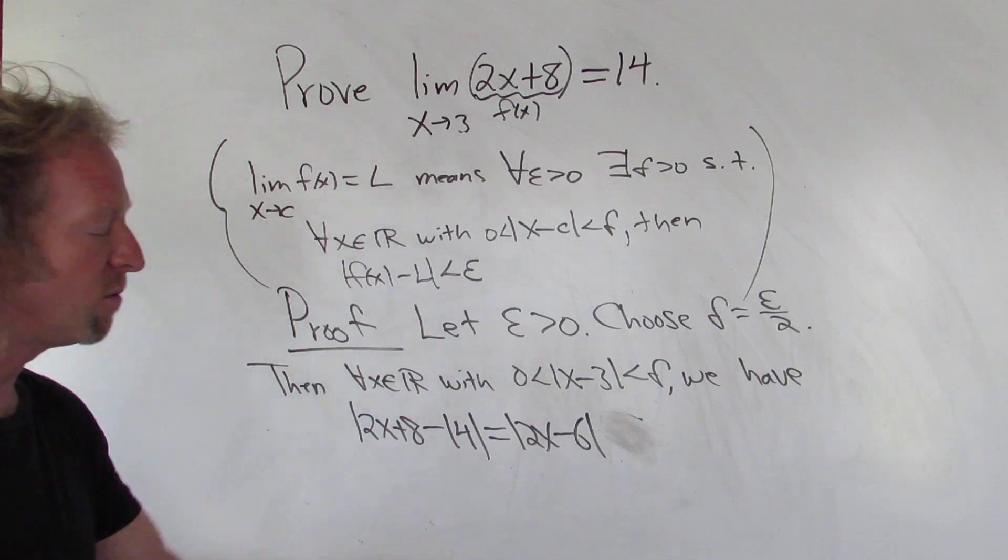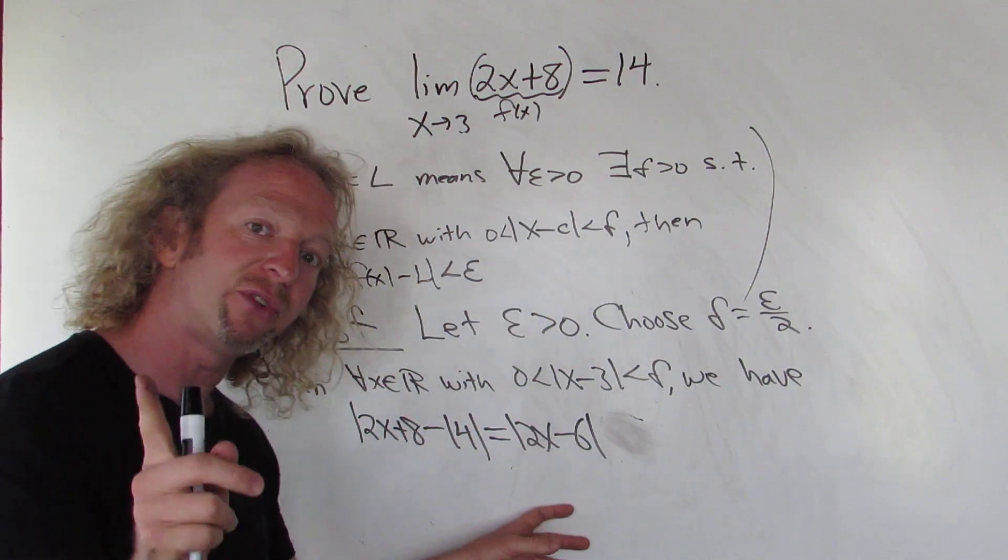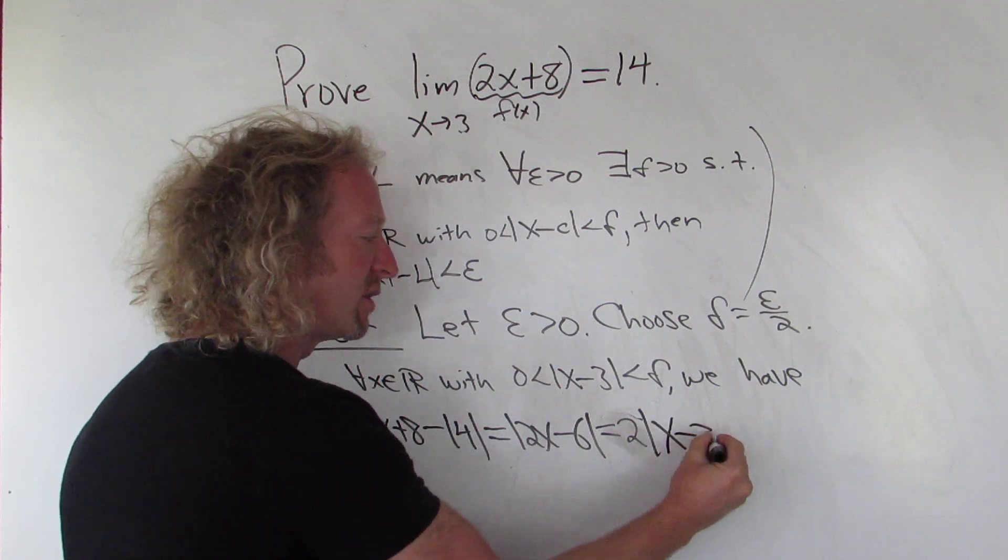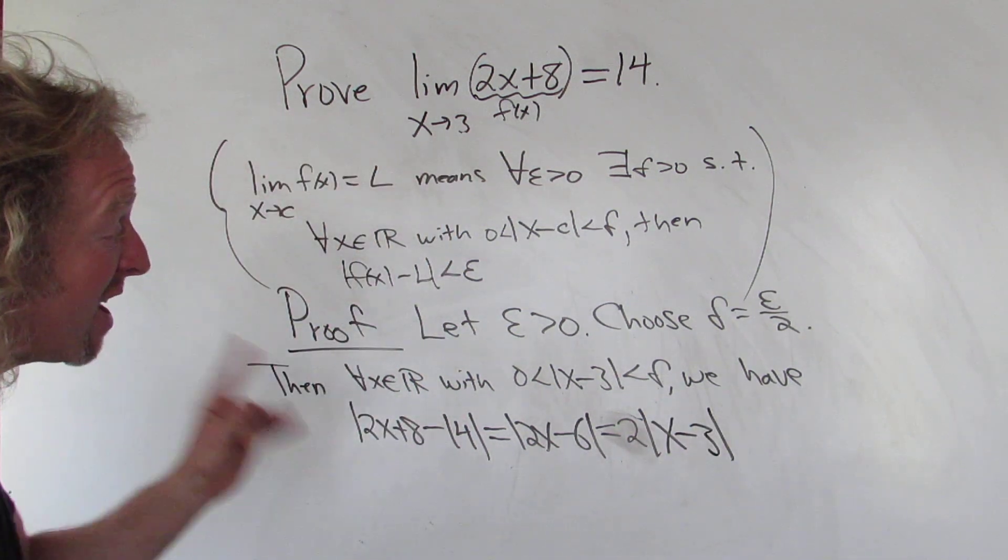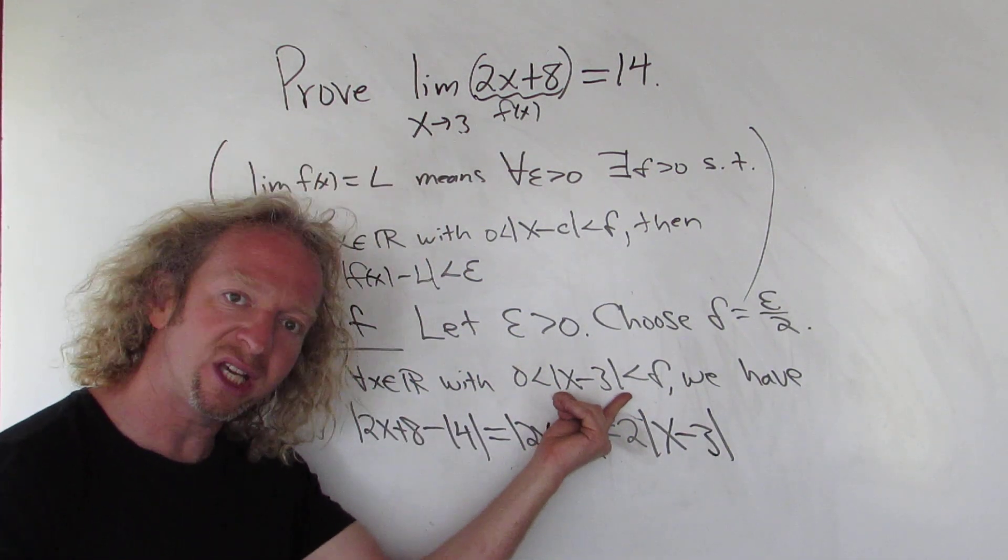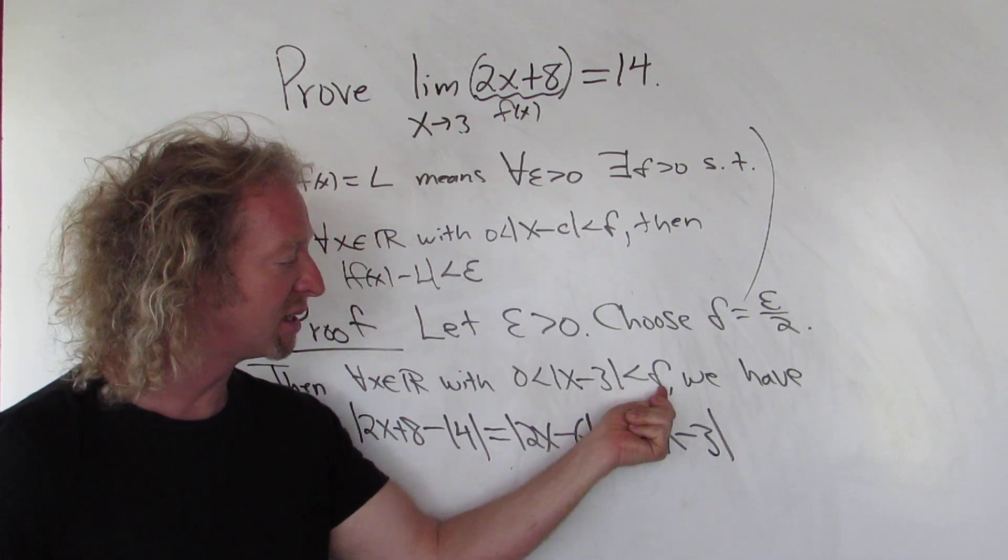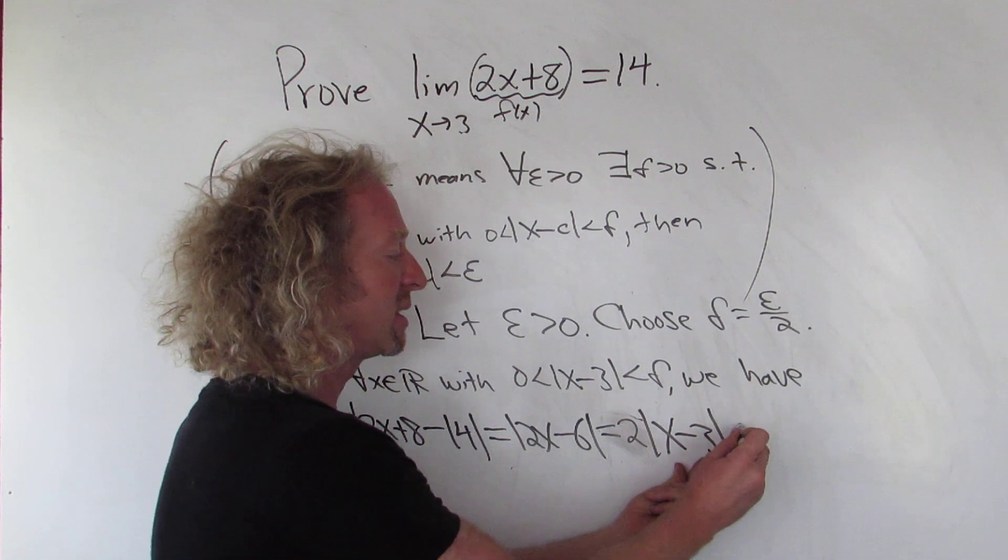Now here, there's not much you can do. But if you think back to your scratch work, there is something you can do. You can pull out the 2. So you get 2 and then x minus 3. And then, check this out. x minus 3 is less than delta, right? The absolute value of x minus 3 is less than delta.